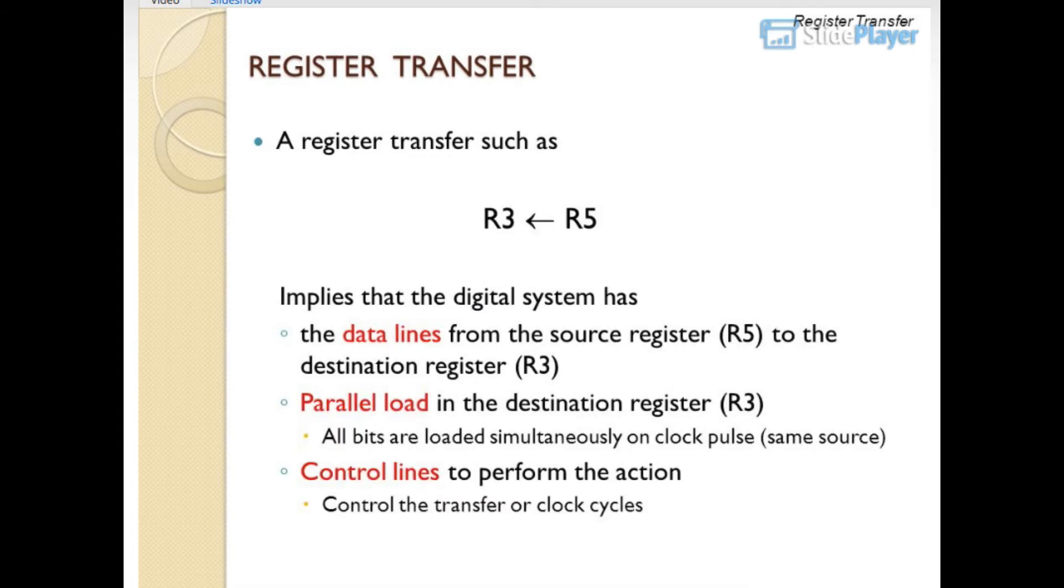A register transfer such as R3 gets R5 implies that the digital system has the data lines from the source register R5 to the destination register R3, parallel load in the destination register R3. All bits are loaded simultaneously on the clock pulse from the same source. Control lines to perform the action control the transfer or clock cycles.